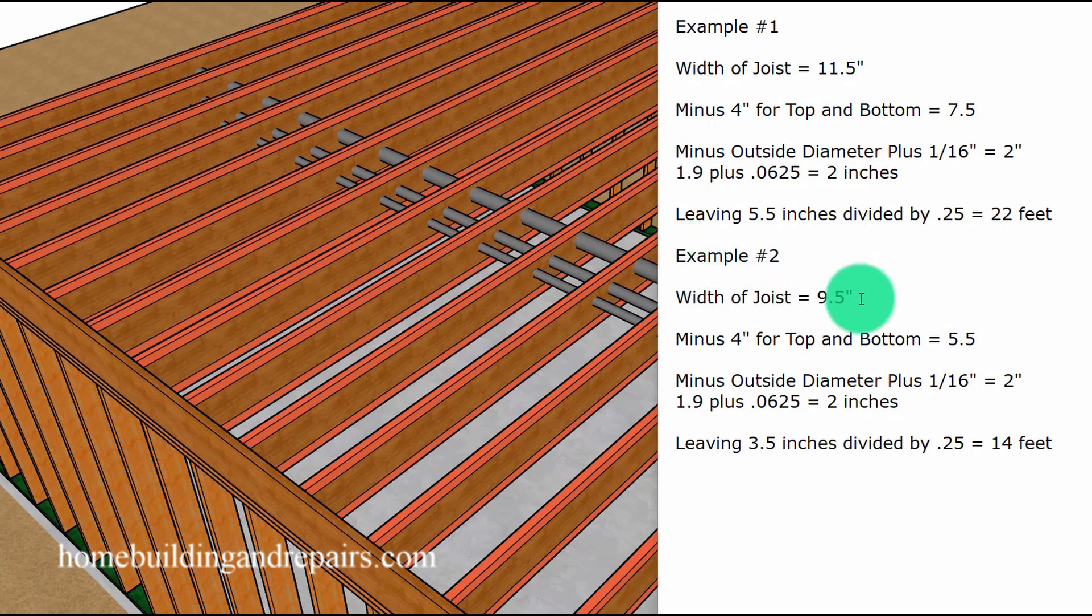In our next example, we will use two by 10 floor joists that are going to be nine point five or nine and a half inches. And if we subtract our four inches, we're going to have five point five inches for the distance in between that we can drill through, along with our two inches for the pipe, leaving us with three and a half inches.